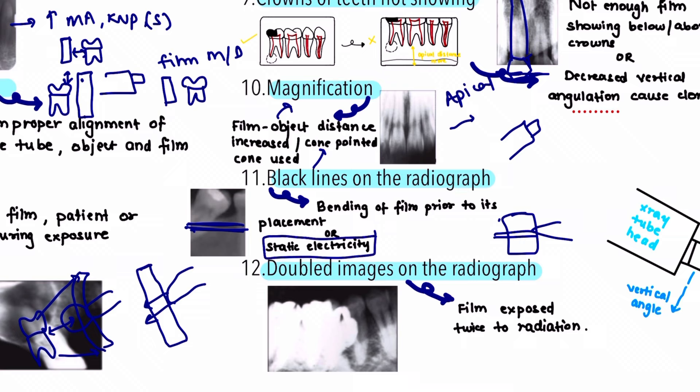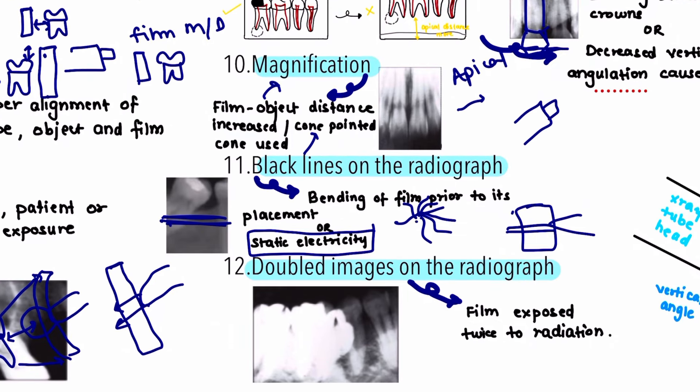Another reason for black lines is static electricity — the development of an electrical charge due to friction when handling the film. This is rarely seen in intraoral radiographs but is commonly seen in extraoral radiographs such as OPGs, appearing as a zigzag or tree-roots pattern. It occurs due to rapid removal of the film from the packet, causing friction and an electric charge. The correction is to handle films very gently.